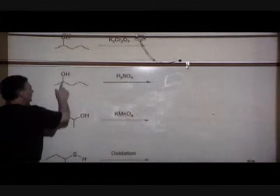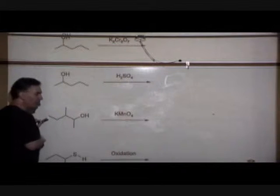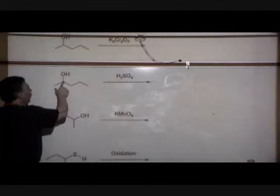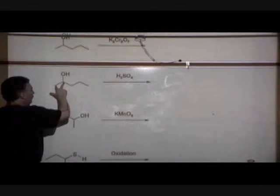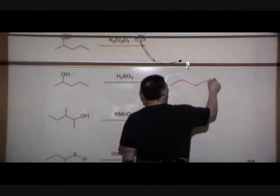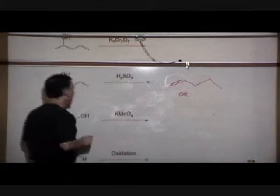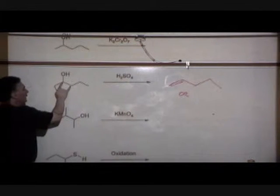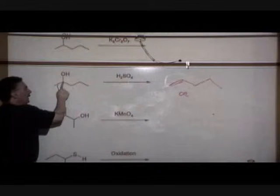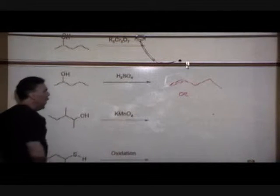Second dehydration of an alcohol. This time we do have a possible variety of products. If the double bond formed on this end of the molecule, it might be a very distinctive and unique product, compared to if the double bond formed between carbons 2 and 3. We've got to take the alcohol group, and then a hydrogen from one of the adjacent carbons. There's two unique products.